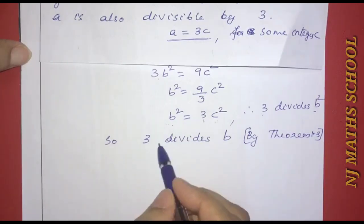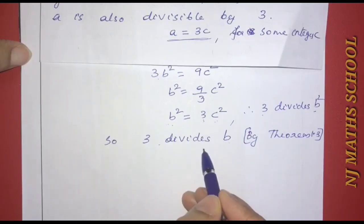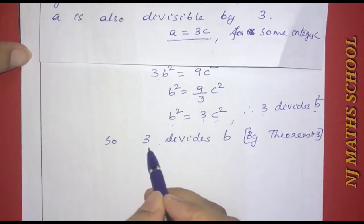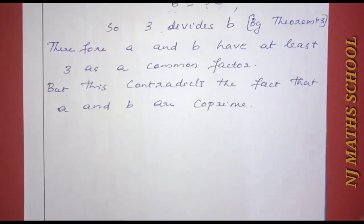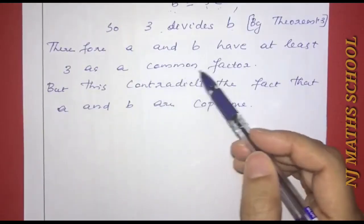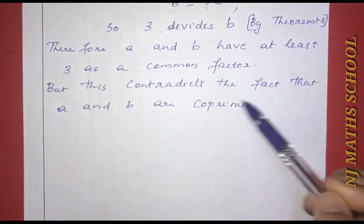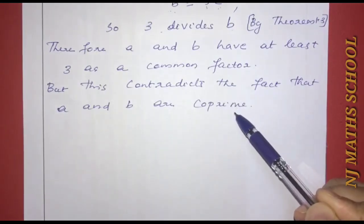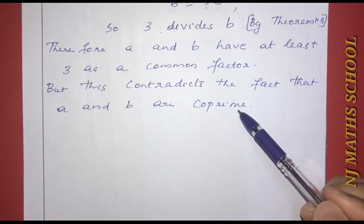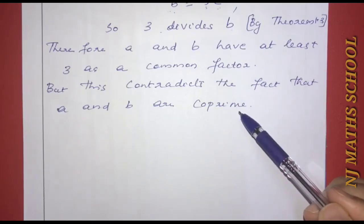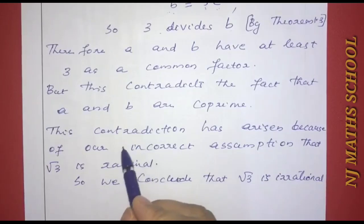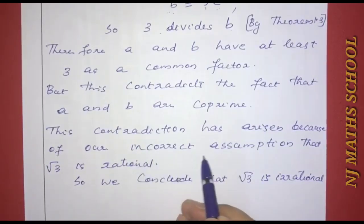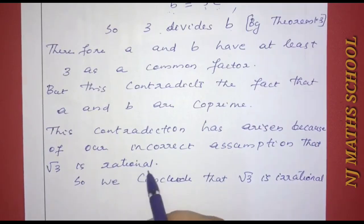So 3 divides both a and b. But this contradicts the fact that a and b are co-prime, meaning they should have no common factor. Since both are divisible by 3, a and b have at least 3 as a common factor. This contradiction arose from our incorrect assumption that root 3 is rational. Therefore, we conclude that root 3 is irrational.